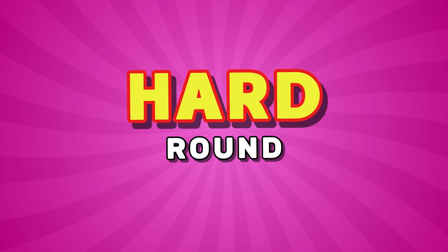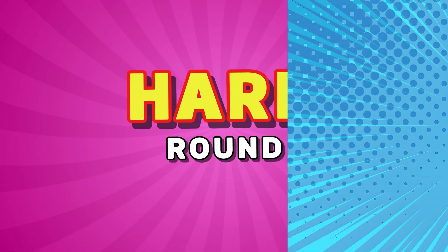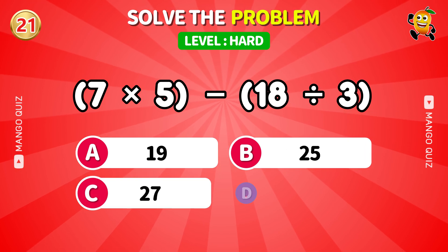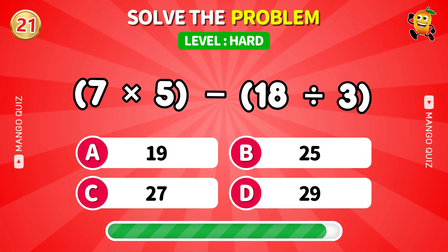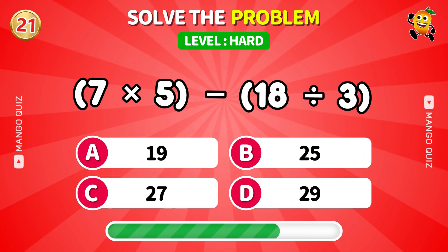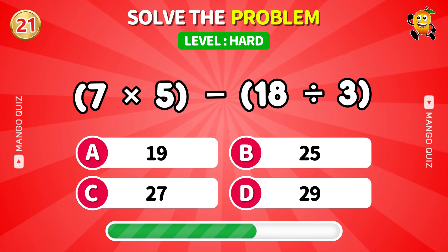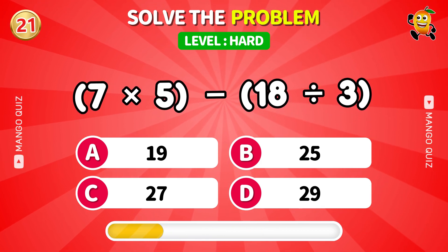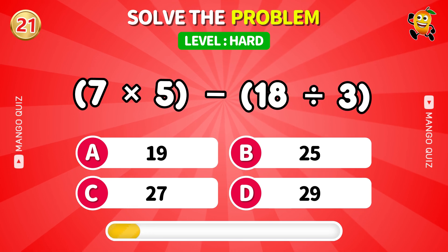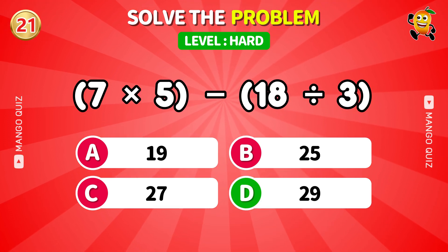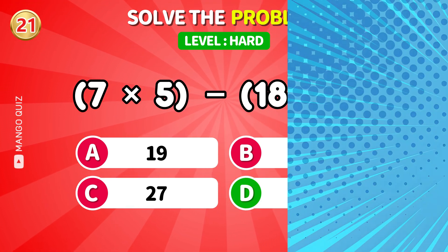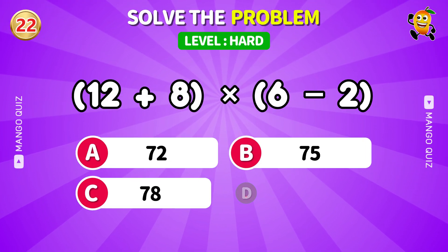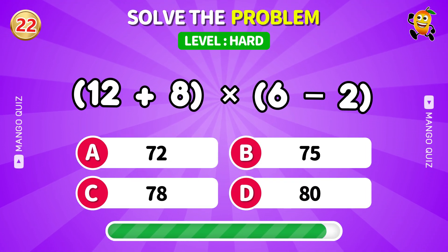Are you ready for some brain work? 7 times 5 minus 18 divided by 3. Answer: 29. Next: add 12 and 8 then times 6 minus 25. Answer: 95.